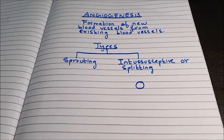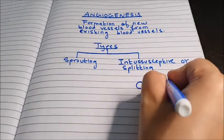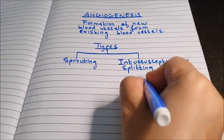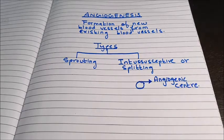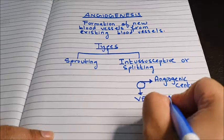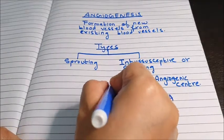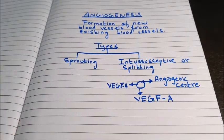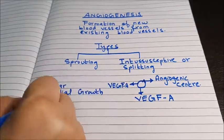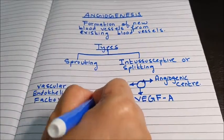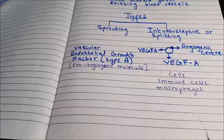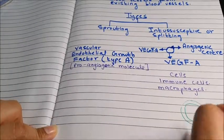Let us say that this is a tissue that is hypoxic or wounded. There are different conditions that can stimulate angiogenesis, so I will call this stimulating tissue the angiogenic center. An angiogenic center releases a proangiogenic molecule. This proangiogenic molecule is vascular endothelial growth factor A, specifically VEGF-A. These proangiogenic molecules are released by different cells such as macrophages in the angiogenic center.